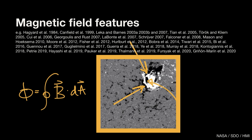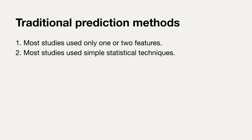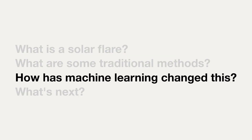There are a lot of great studies that describe many different features of an active region. Traditionally, most studies used only one or two features together with simple statistical techniques. So enter machine learning. Machine learning gives us the ability to combine tons of features together in a meaningful and optimal way — instead of one or two features, we can use tens or hundreds. And machine learning also allows us to take advantage of extremely large data sets like the one generated by the Solar Dynamics Observatory.